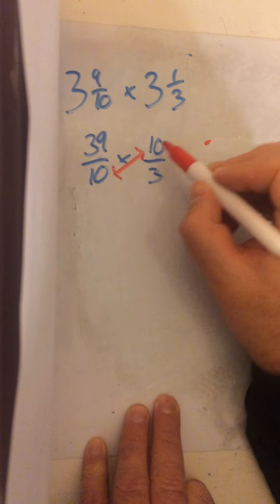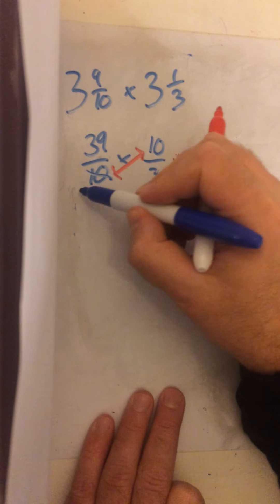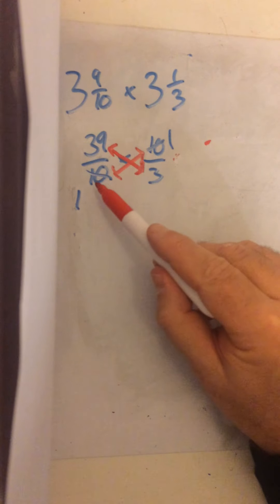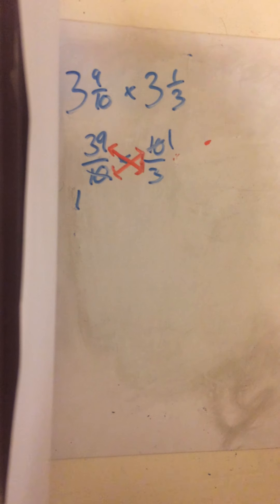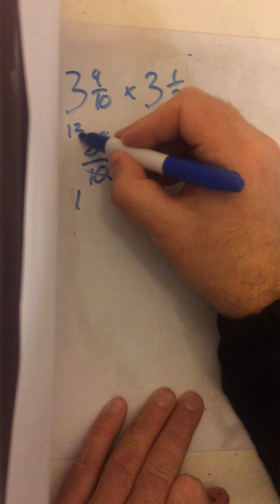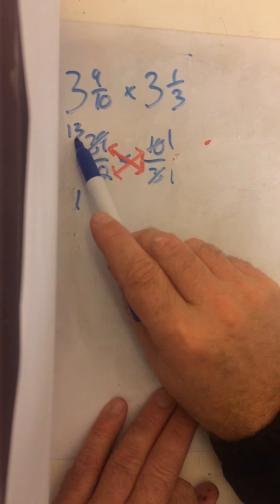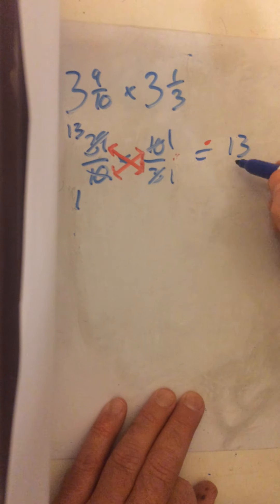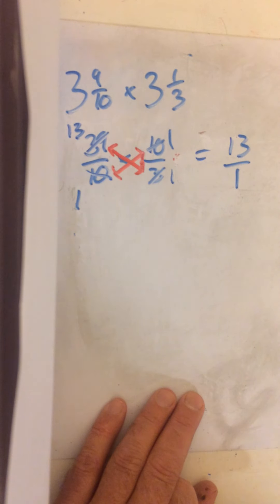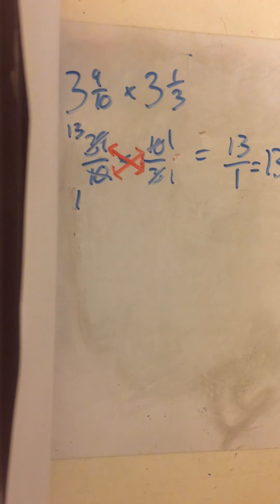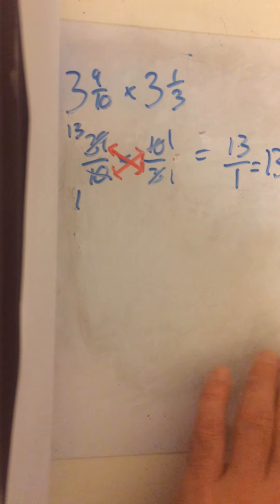But to make it easier, we cross-simplify along the diagonals. What goes into both ten and ten? Ten — each becomes one. Then check the other diagonal: what goes into thirty-nine and three? Three goes into both — thirty-nine becomes thirteen, three becomes one. Now multiply across: thirteen times one is thirteen, one times one is one. Thirteen over one is thirteen, so our answer is thirteen.